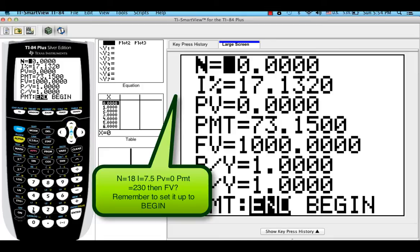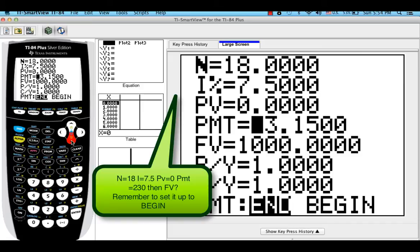Very important. Here I'm going to put 18 because it's 18 years. Here I'm going to put 7.5. The payment, present value just put 0, and then payment we're going to put $230.